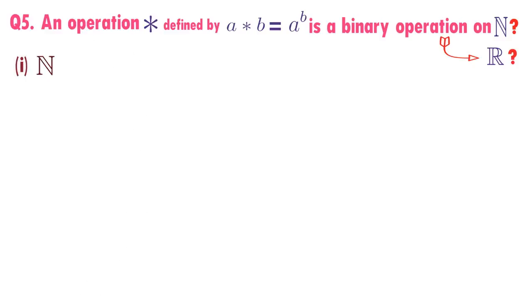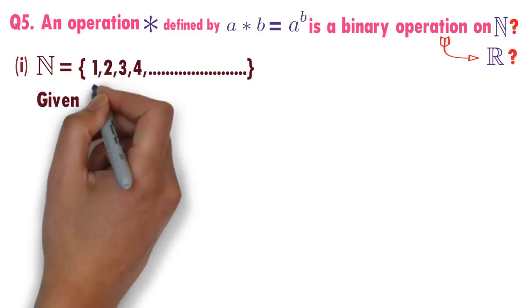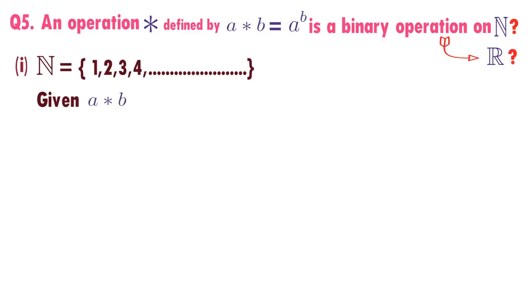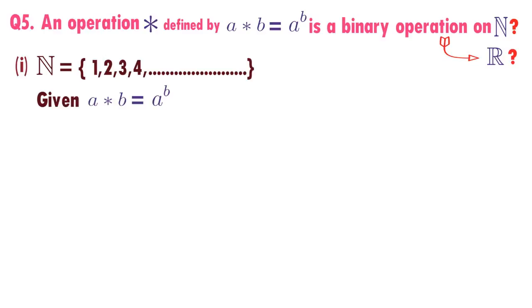What are natural numbers? 1, 2, 3, 4 and so on are the natural numbers. Given that A star B equals A power B. What to do now? We need to check this.